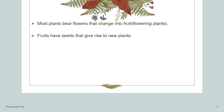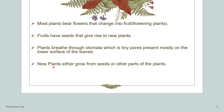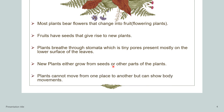Most plants bear flowers that change into fruits — those are called flowering plants. There are also non-flowering plants. Fruits have seeds that give rise to new plants. Plants breathe through stomata, which are tiny pores present mostly on the lower surface of the leaves. New plants either grow from seeds or other parts of the plant. Plants cannot move from one place to another, but can show body movements — for example, the sunflower faces towards the sun as it moves.